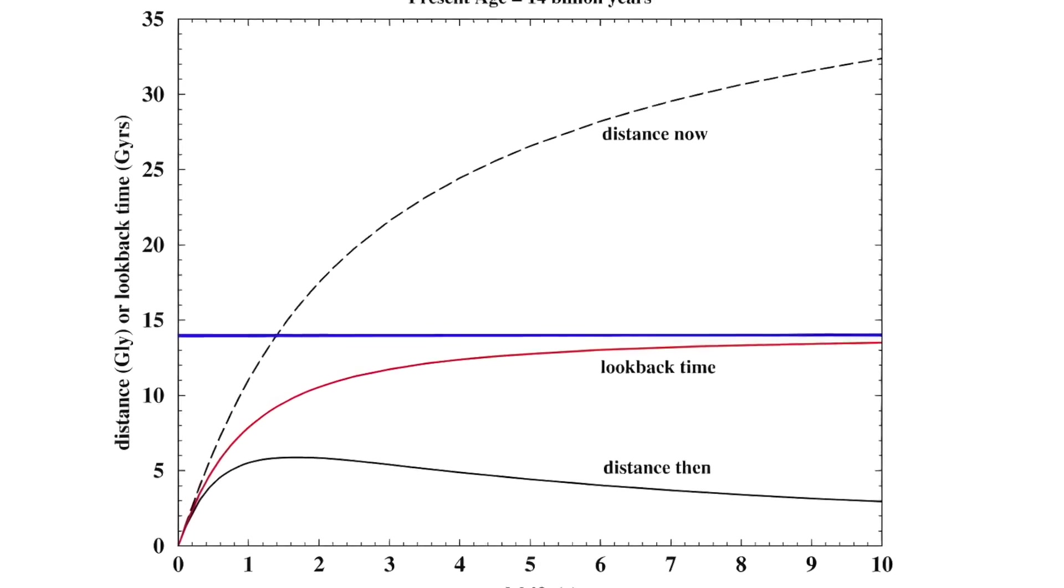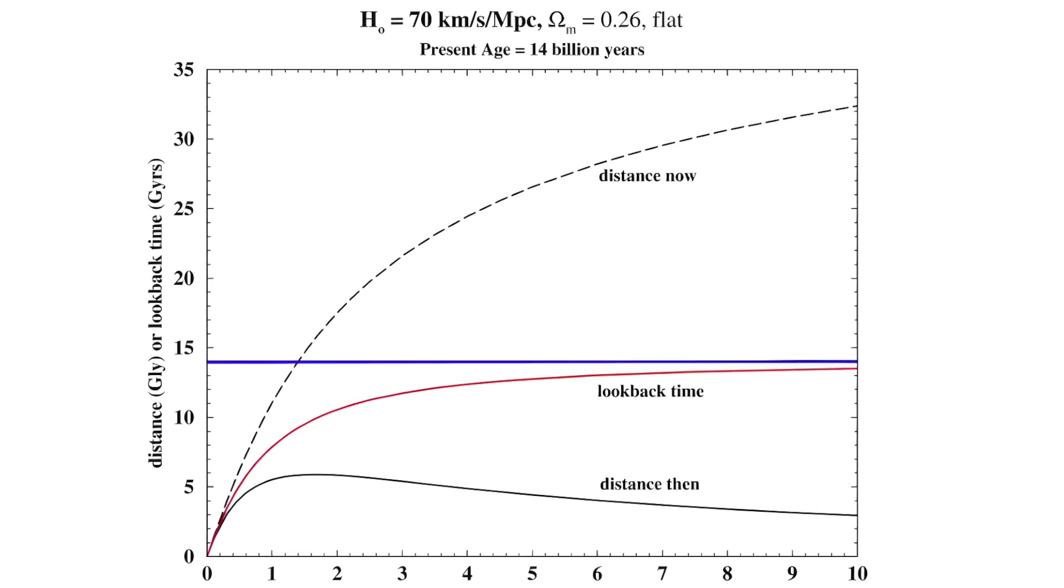The dotted line marked distance now on the graph, and can give a distance in light years that exceeds the age of the universe, the horizontal blue line on the graph.